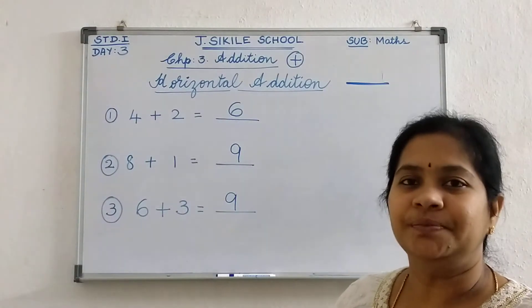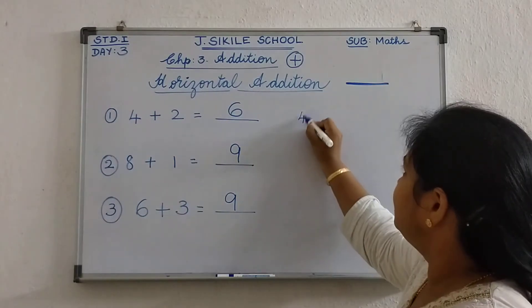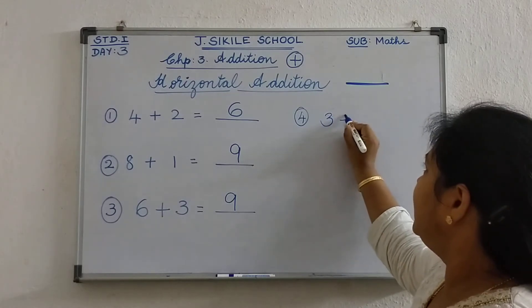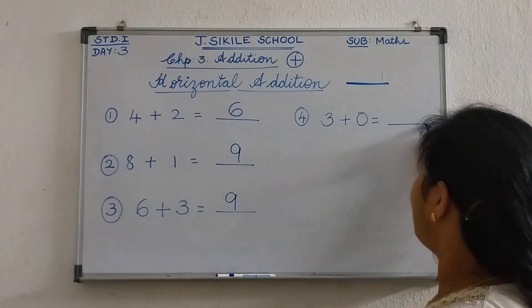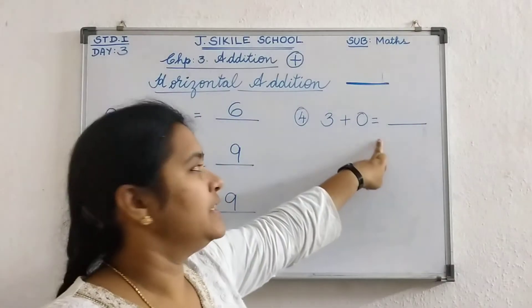Now you say me any number. Okay. 4th question. Okay. 3 plus 0. Okay. 3 plus 0 is equal to dash. Okay. Now say me. 3 plus 0 is equal to dash.